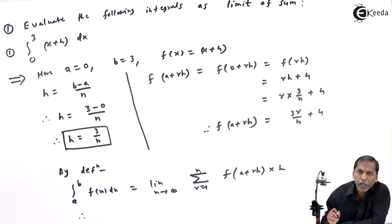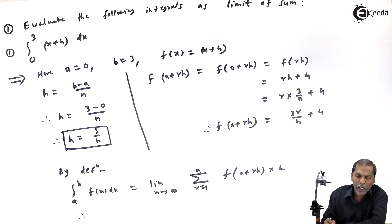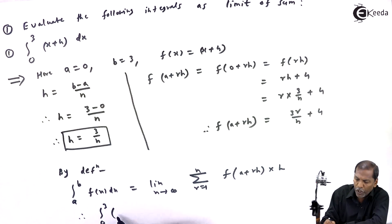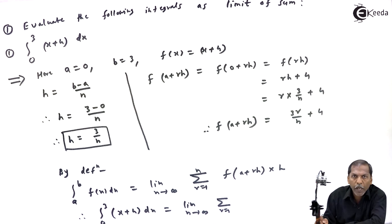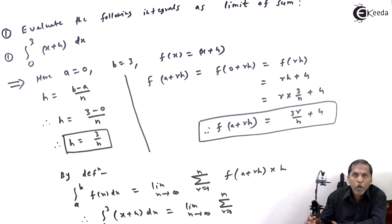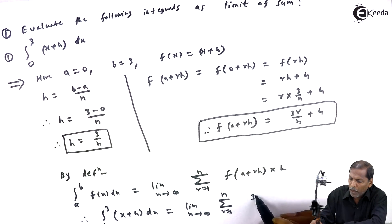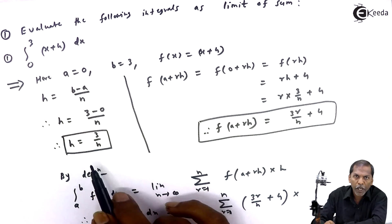By definition, the formula is: integral a to b of f(x) dx is equal to limit n tends to infinity, summation r takes value 1 to n, of f of a plus rh into h. Therefore, integral 0 to 3 of (x plus 4) dx equals limit n tends to infinity, summation r from 1 to n, of (3r upon n plus 4) into h, where h equals 3 upon n.